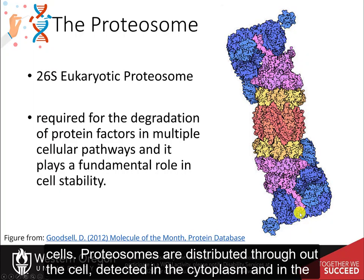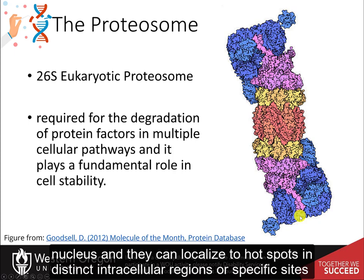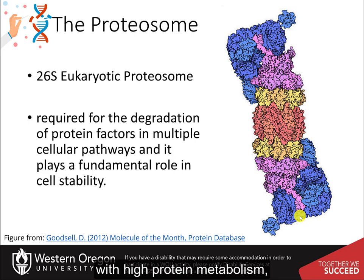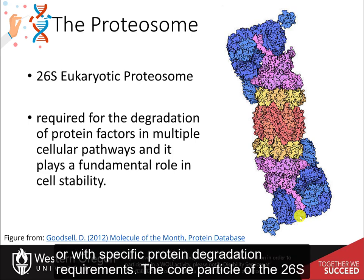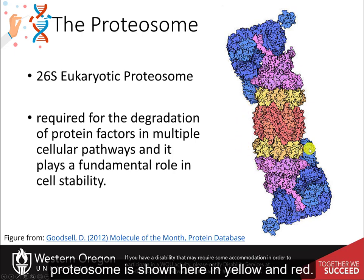Proteasomes are distributed throughout the cell, detected in the cytoplasm and in the nucleus, and they can localize to hot spots in distinct intracellular regions or specific sites with high protein metabolism or with specific protein degradation requirements. The core particle of the 26S proteasome is shown here in yellow and red.